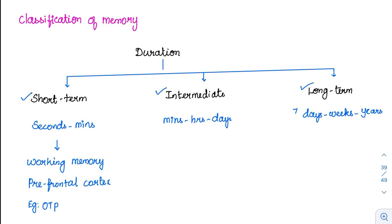What is short-term memory? In short-term memory, you remember something for seconds to minutes. Intermediate is minutes to hours to days — you remember it for a longer duration. Then long-term is days to weeks to years — you remember it for a very, very long time.